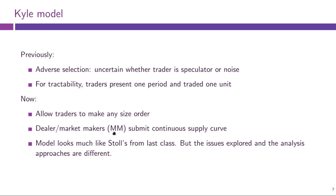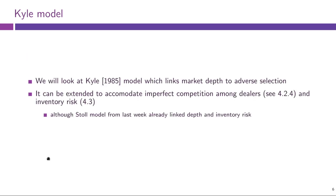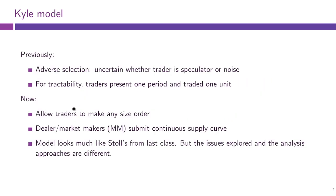Now dealers or market makers, rather than submitting a single bid and ask quote for each direction of the trade, will submit a continuous supply curve: for any trade of any size they will quote a price. One thing to note straight away is that this model will somewhat resemble Stahl's model from last class, but both the issues explored and the analysis approaches are different across the two models. Even the Kyle model with no adverse selection and inventory risk, as I advertised, will be analyzed quite differently from Stahl's model — slightly more reasonable, but the assumptions and analysis process are quite different.